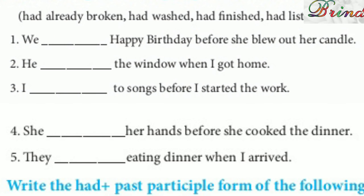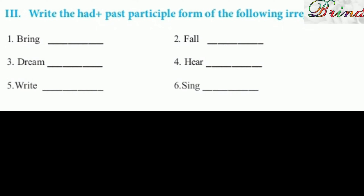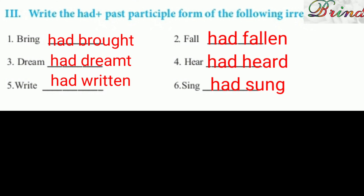Moving on to Roman numeral three: write the 'had' plus past participle form of the following irregular verbs. Bring — the third form is 'brought,' so had brought.